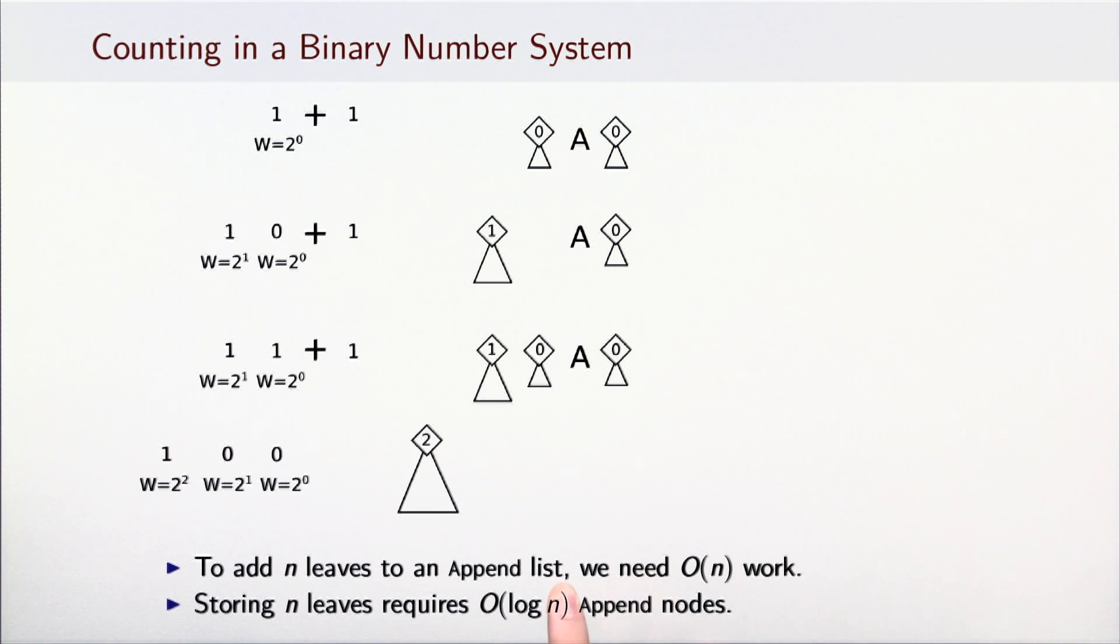First, to add n leaves like this takes O(n) work, meaning that on average, adding each leaf requires O(1) work. Second, storing n leaves requires a logarithmic amount of Append nodes.